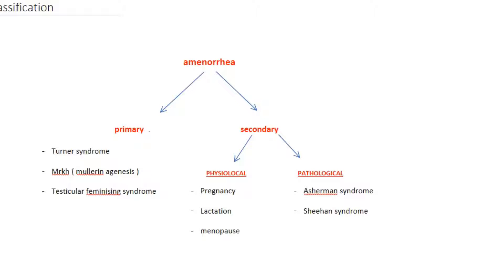Primary amenorrhea is when a girl has not got her first menstruation or first menstrual period. Secondary amenorrhea is absence of menstruation for a period of six months or more in a previously normally menstruating woman.